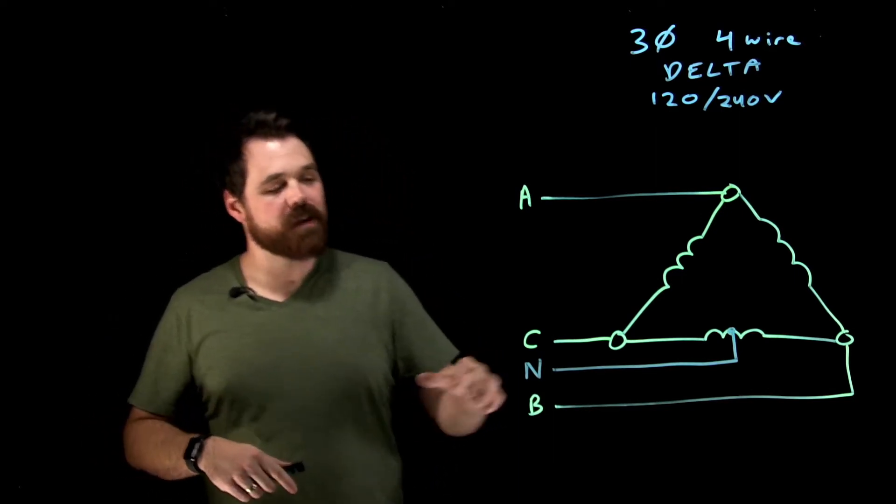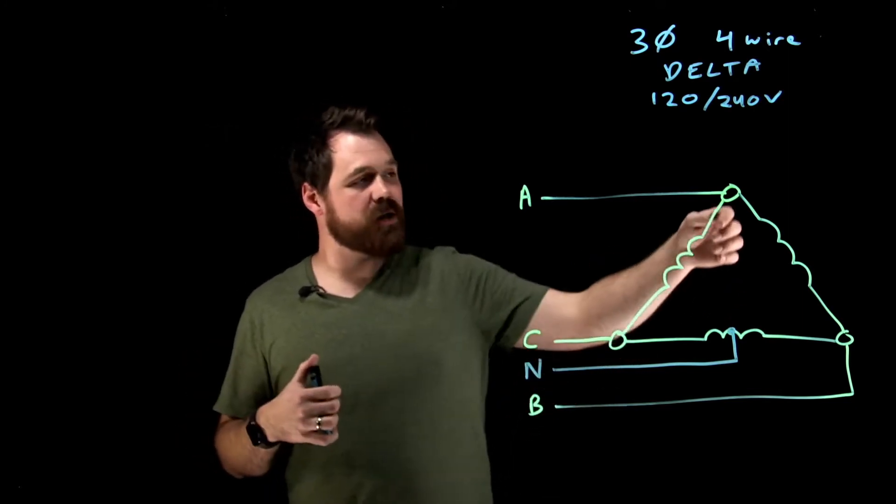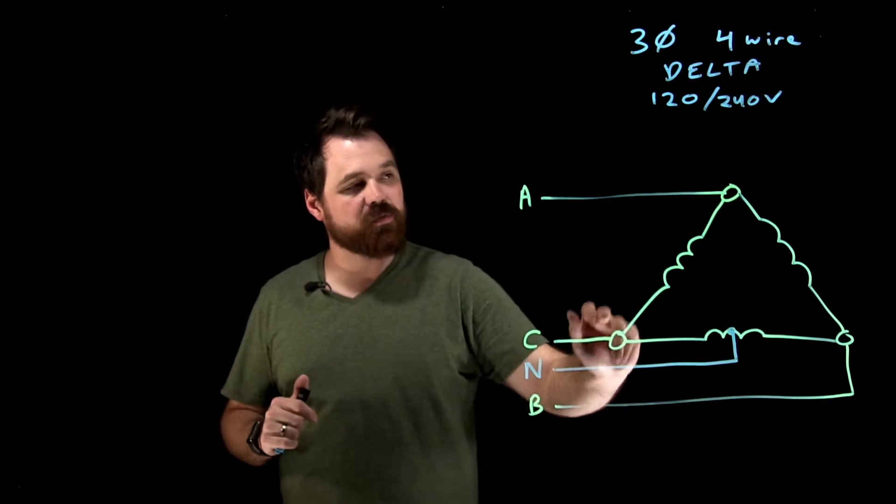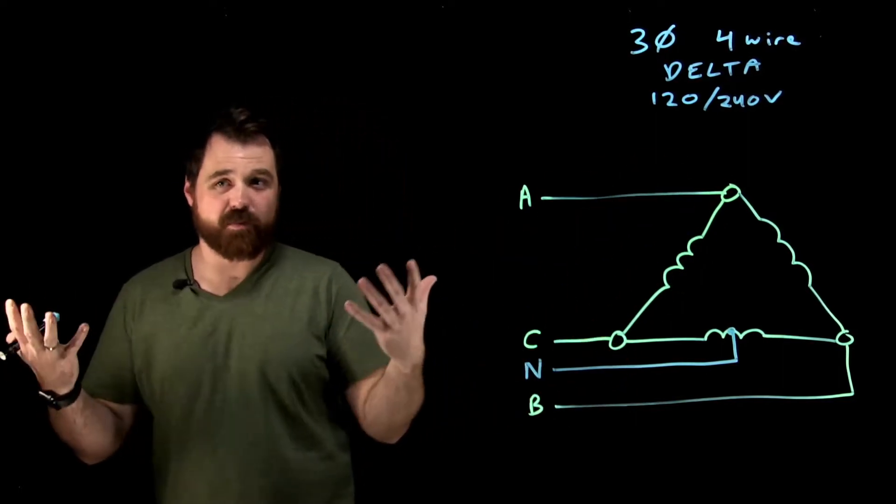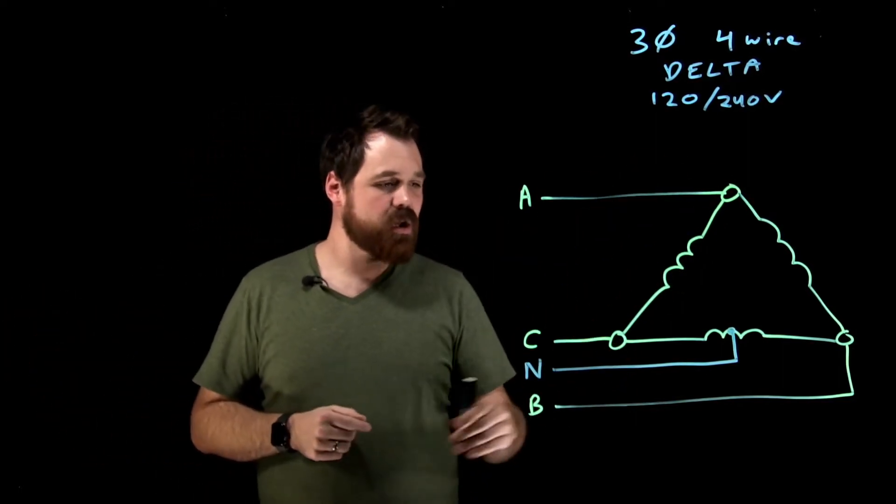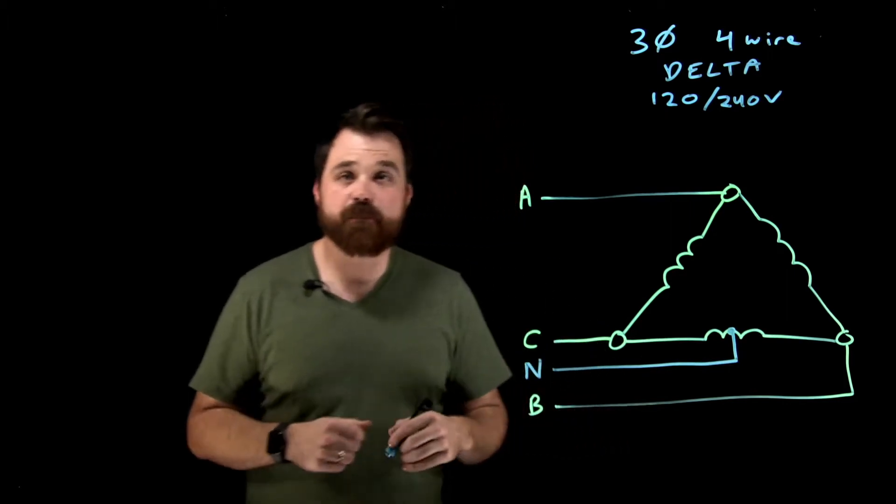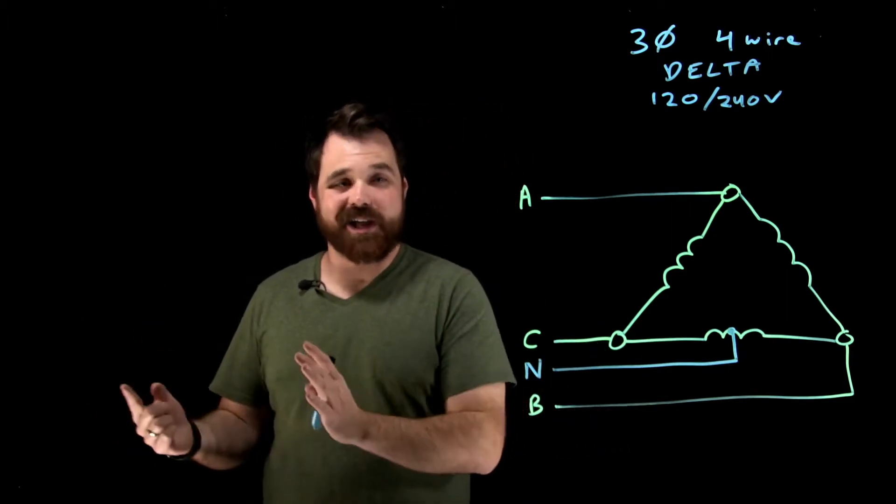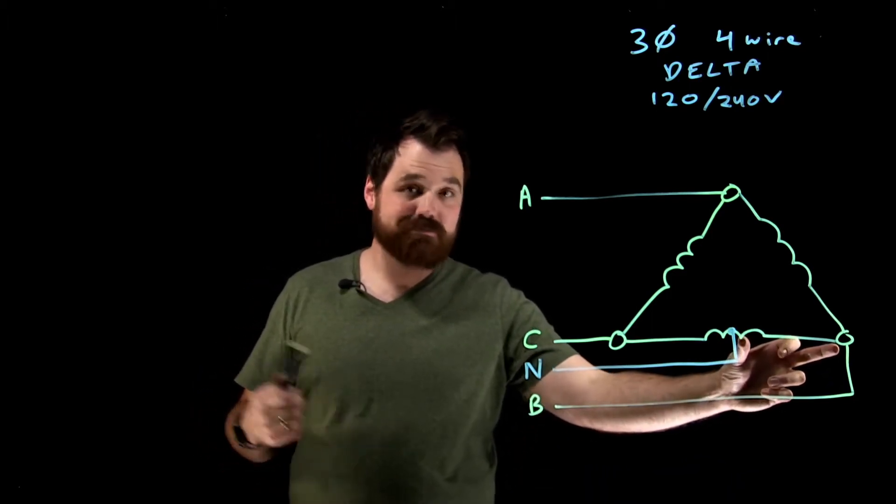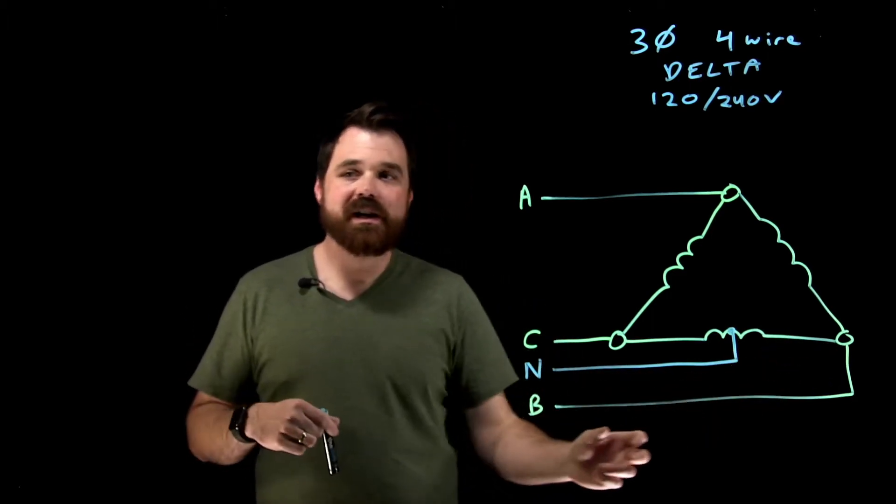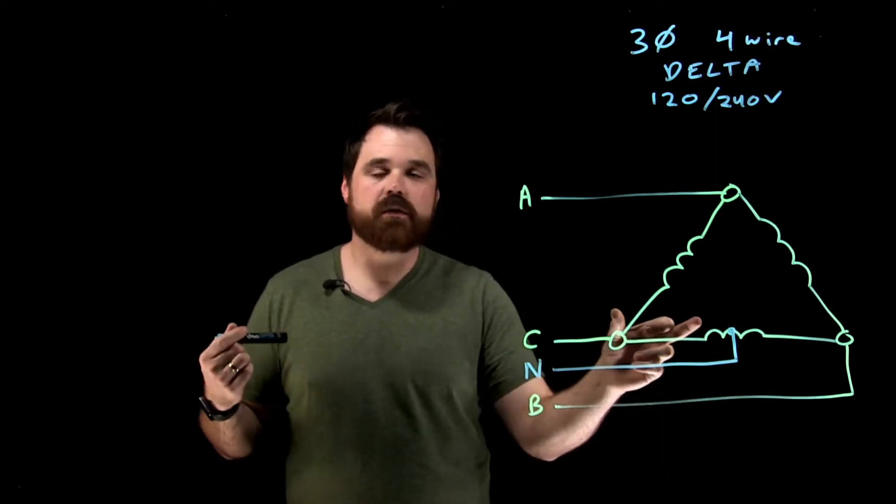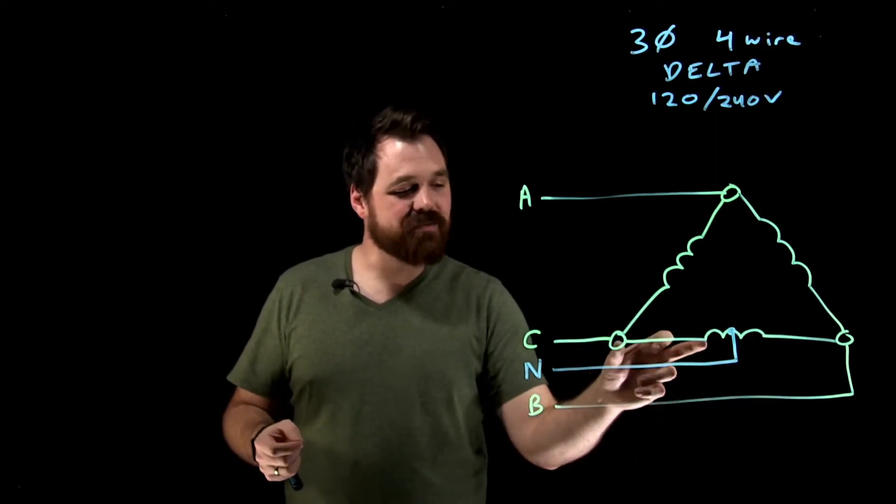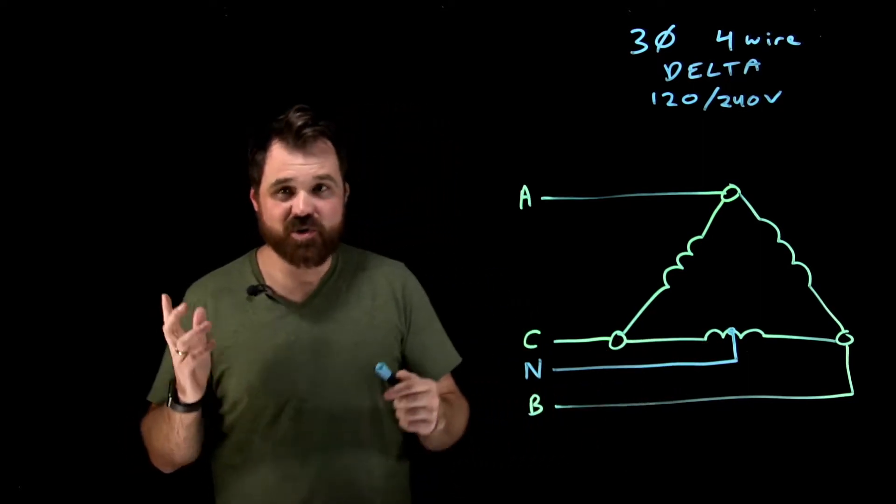Now, what we see there, because our voltage was from A to B 240, from B to C 240, and from C to A 240, our three-phase delta voltages, when we center tap that winding, we're taking a 240-volt winding and we're cutting it in half. Meaning from B to N I get 120 volts, and from C to N I get 120 volts.